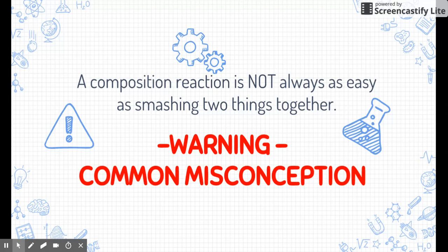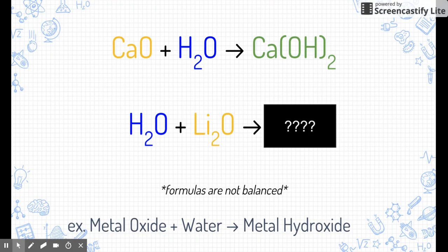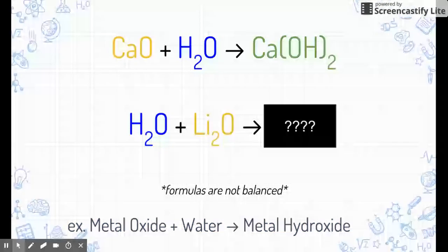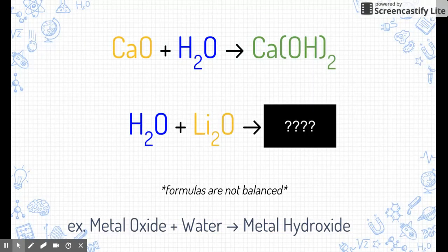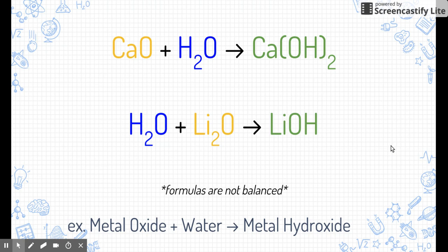Now the second type of composition reaction: metal oxide plus water gives us a metal hydroxide. Here we have calcium oxide — calcium is a metal — plus water, so we're going to get calcium hydroxide. See if you can figure out the next one. Lithium oxide plus water gives you lithium hydroxide. Note that the two reactants can appear in any order — water could be first and the metal oxide second — and you'll still end up with a metal hydroxide.